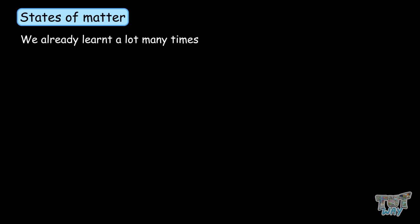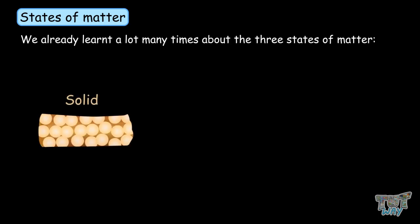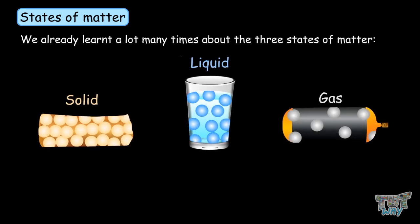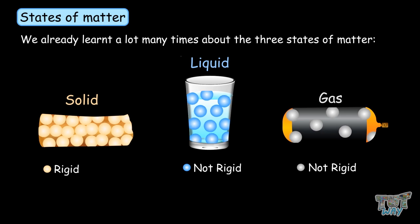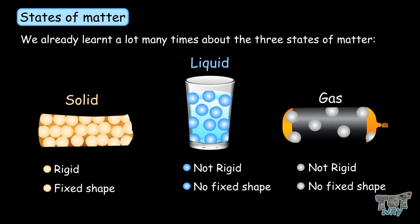We already learned about the three states of matter: solid, liquid, and gas. We know solids are rigid, liquids are not rigid, and gases are not rigid at all. Solids have a fixed shape. Liquids and gases have no fixed shape.